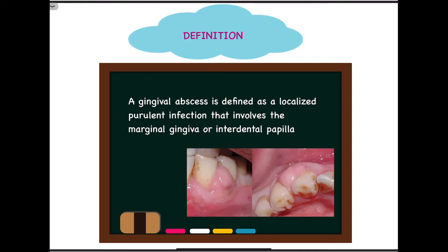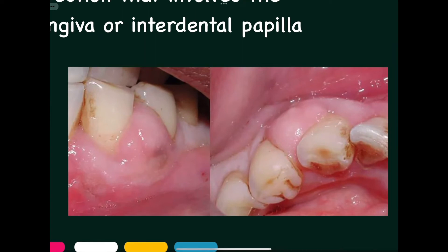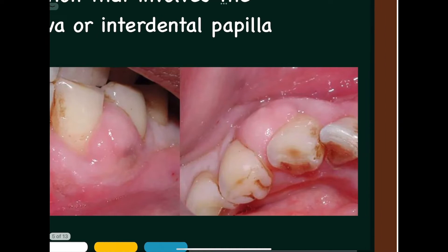When we talk about gingiva, we know it consists of three parts: the marginal gingiva, the attached gingiva, and the interdental papilla. Gingival abscess is a terminology given with regards to the marginal gingiva or the interdental papilla, and not the attached gingiva. In the pictures shown, the first picture involves the interdental papilla, and the second picture involves the marginal gingiva as well as the interdental papilla.